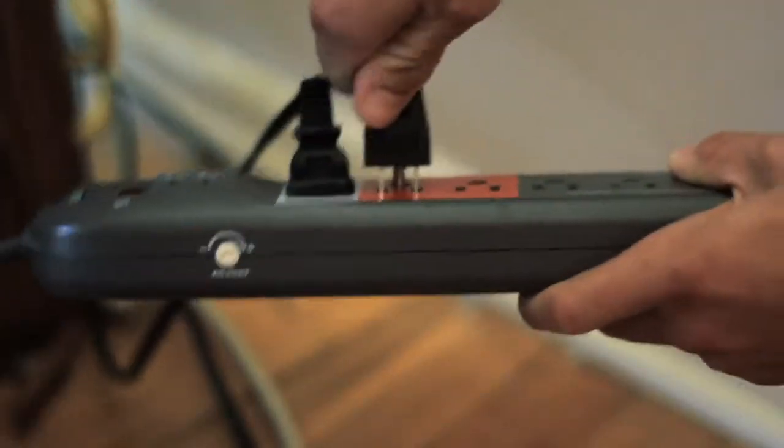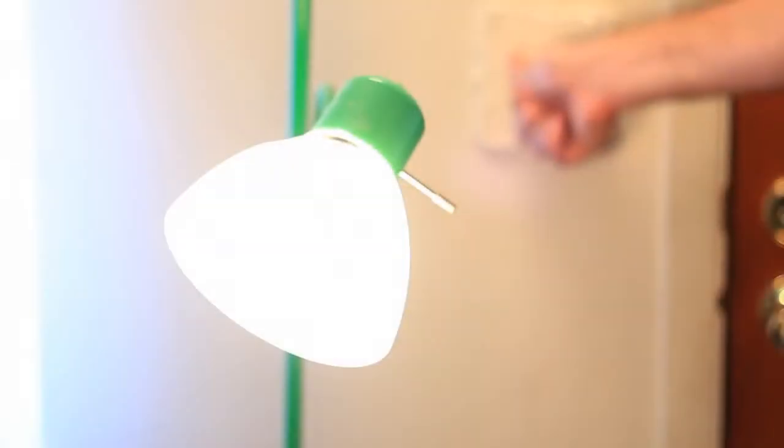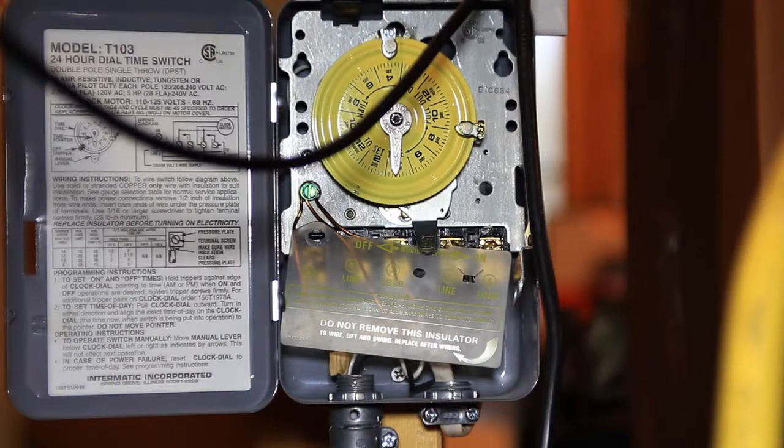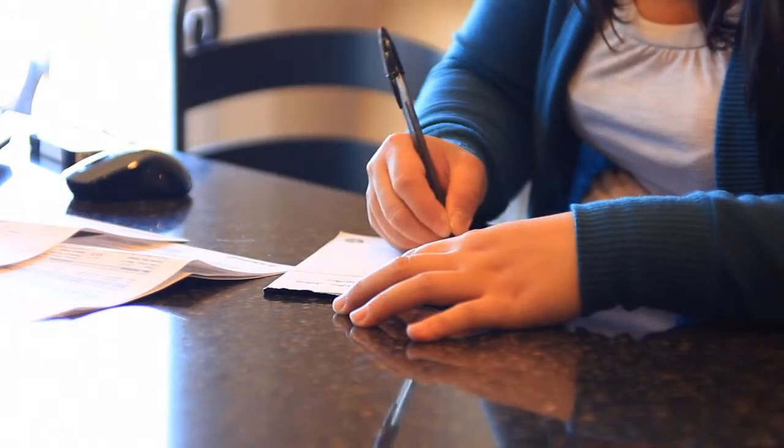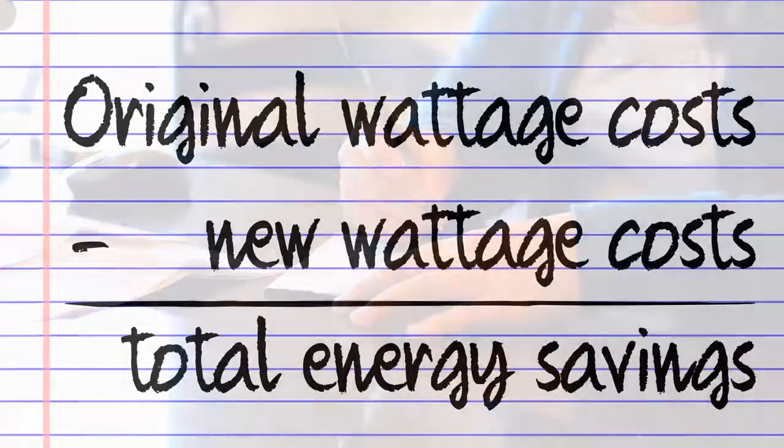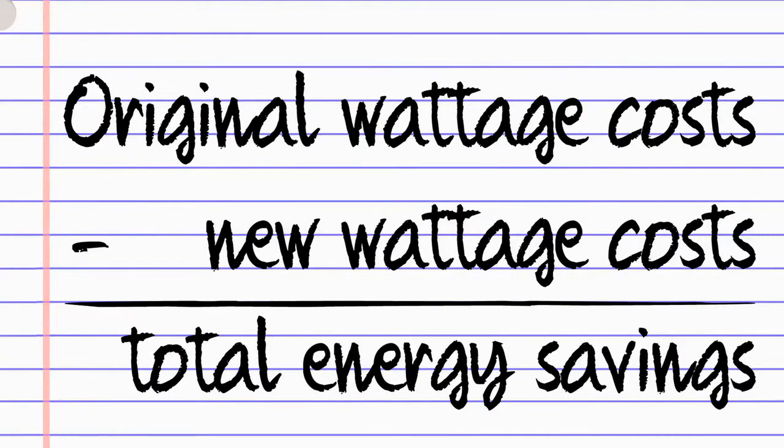Once you are satisfied with what you unplugged, put on standby, or on a timer, record your improved wattage. Calculate the new annual cost. Subtract the original number from the new number to get your approximate annual energy savings.